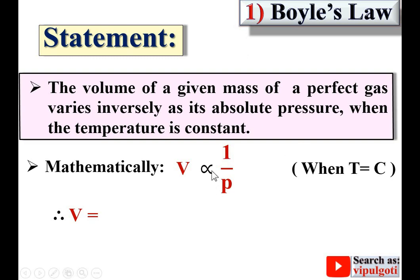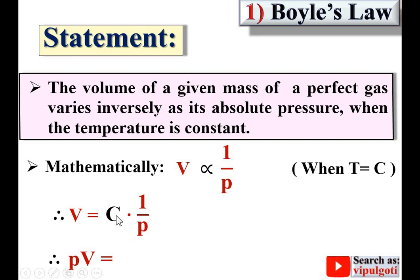If we introduce a proportionality constant, then V is equal to C times 1 upon P, where C is the proportionality constant. So we can say PV is equal to C, meaning it is constant. The statement of Boyle's law is that the product of pressure and volume for any state of a given mass of a perfect gas is always constant.